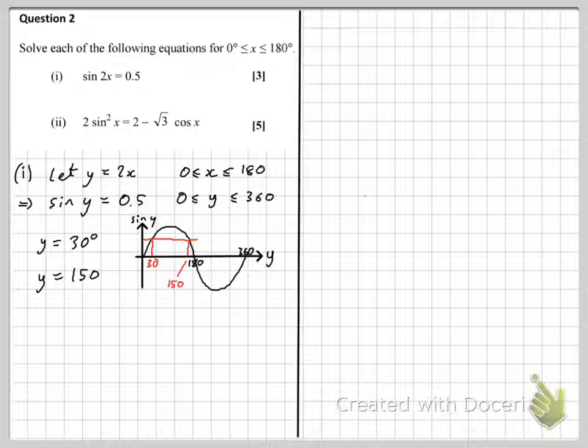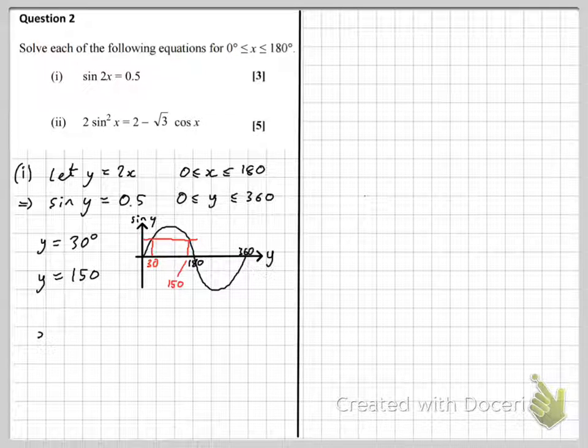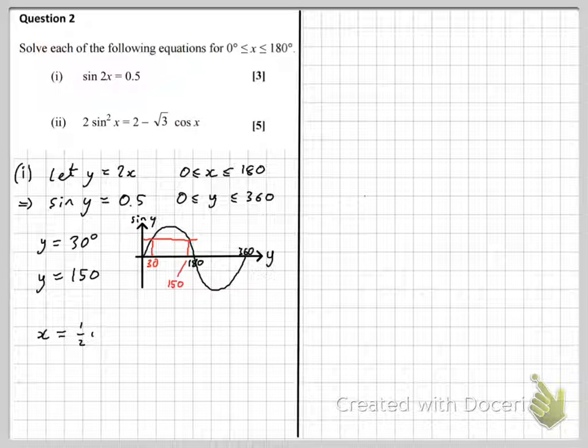Now, some people stop there. They think they've finished. But of course, we would have forgotten to actually solve the original problem, which is in x. So just note that to get back from y to x, we have to halve the y values. And our final answers then are x equals half of 30 is 15, and half of 150 is 75 degrees.